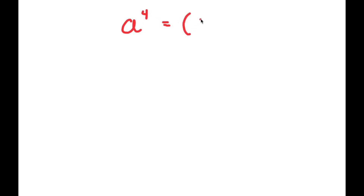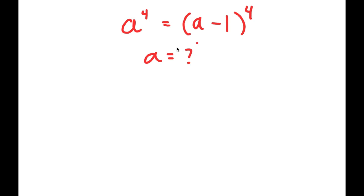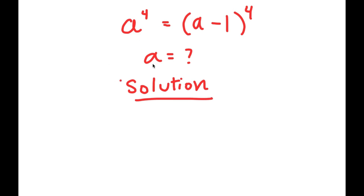In this video, I'm going to be solving the equation a to the power of 4 is equal to a minus 1 to the power of 4. My only variable in this equation is a, which is the variable I'm solving for. I'm going to rewrite this problem down here so I have a little more solving space. So my problem is a to the power of 4 is equal to a minus 1 to the power of 4.